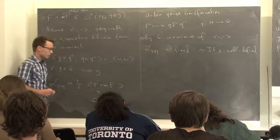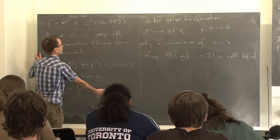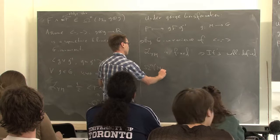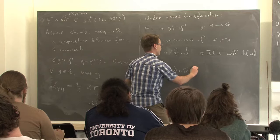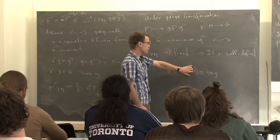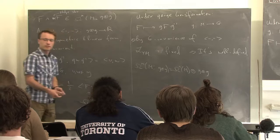The Hodge star just operates on the form part — it doesn't touch the Lie algebra part. So whenever I write F wedge star F, this just means an n-form valued in the tensor product of the n-form with two Lie algebra elements. The Hodge star and the wedge product just operate on the form part, and then you do the pairing on the Lie algebra elements.